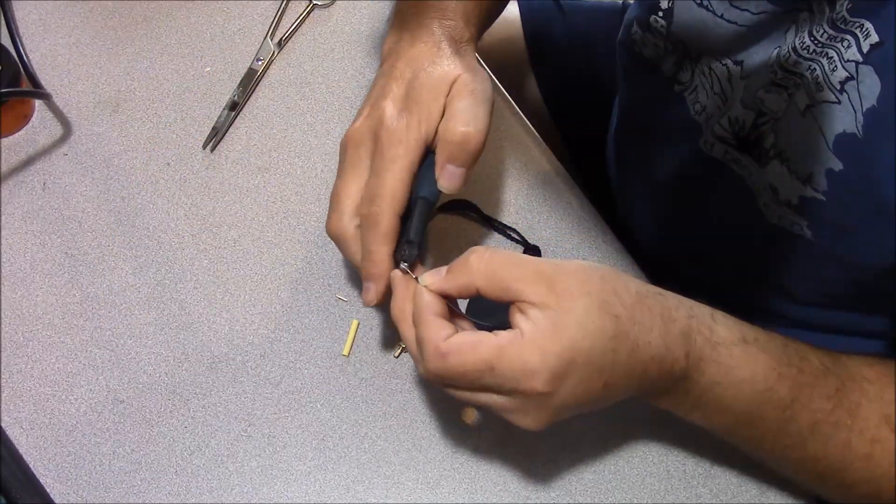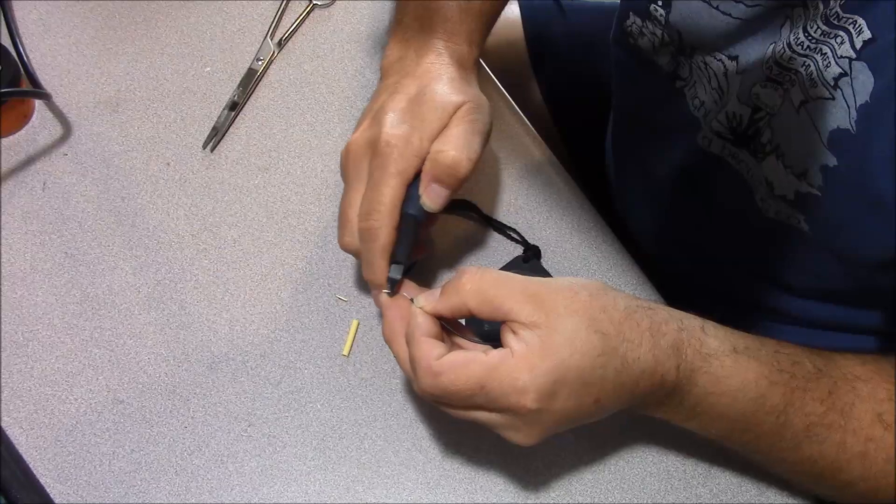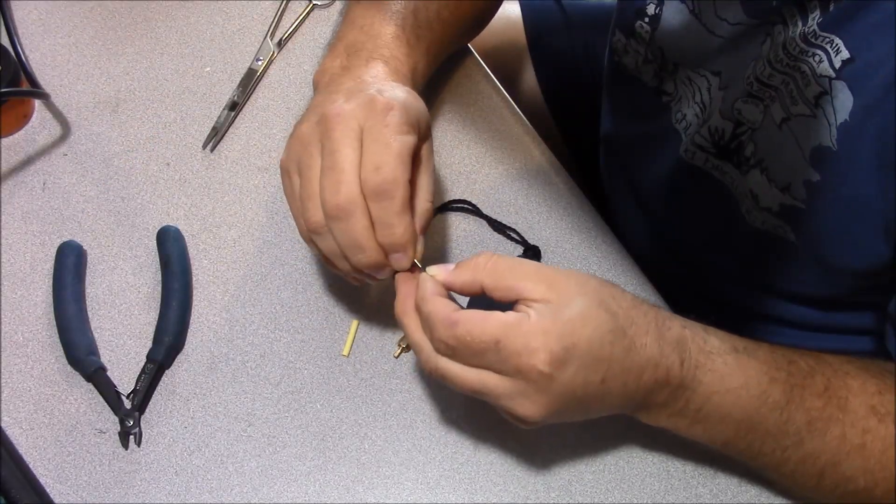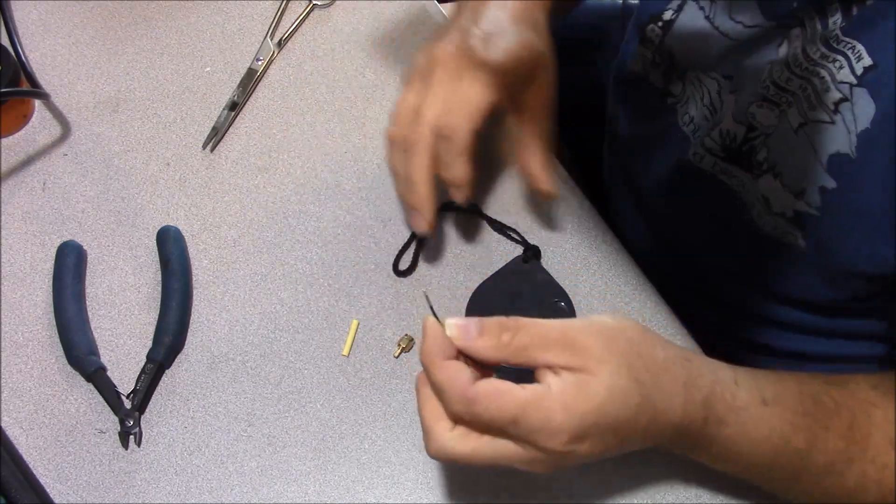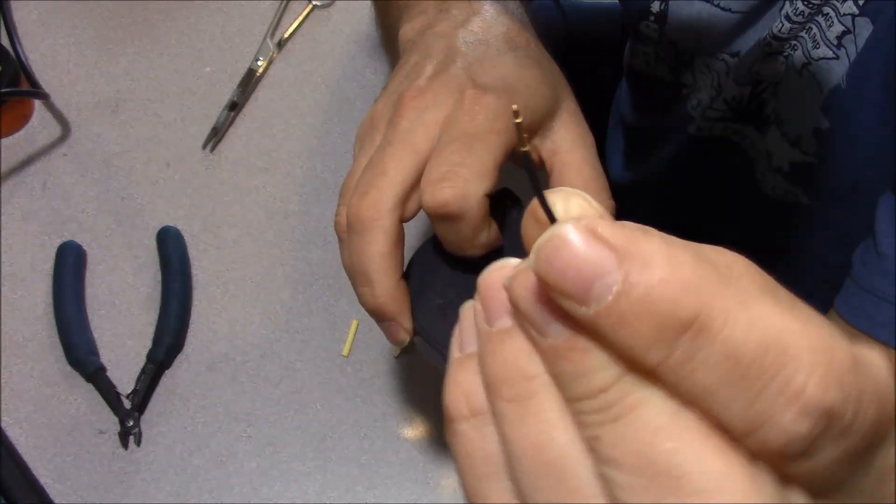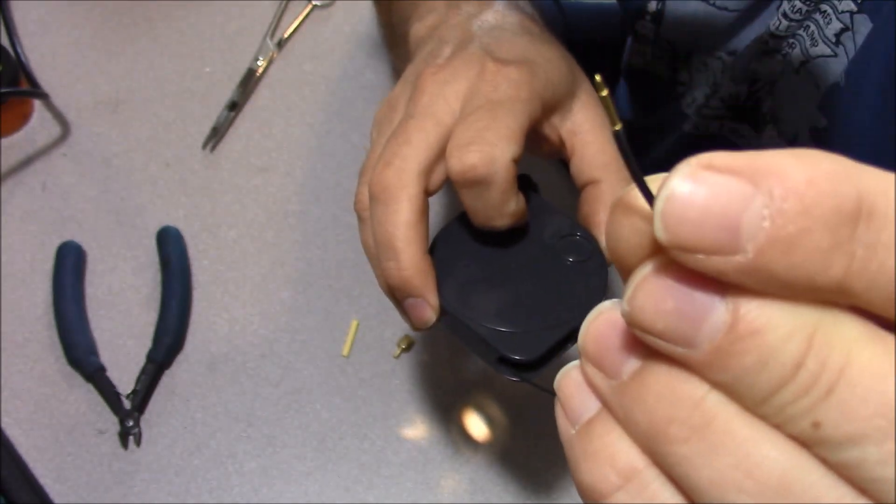And then you'll cut it to length. The length on these is usually around 5mm. You'll bring it back to where it'll fit like that. And then we're going to go ahead and solder it.